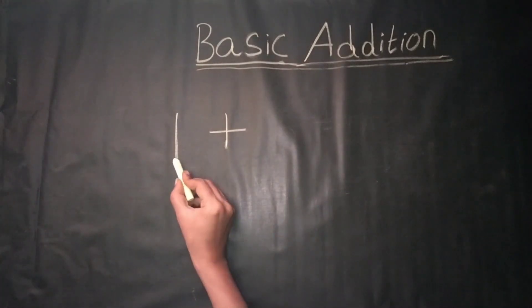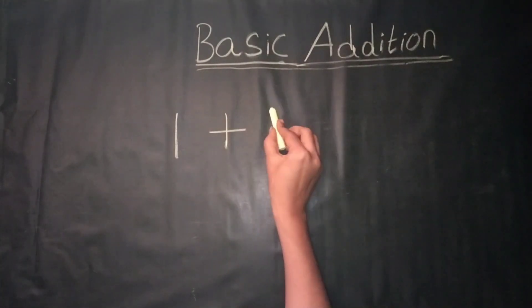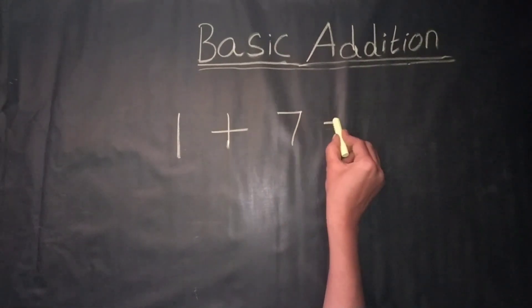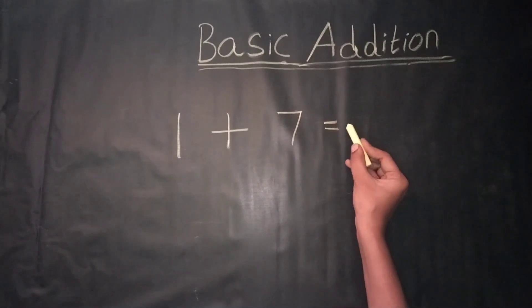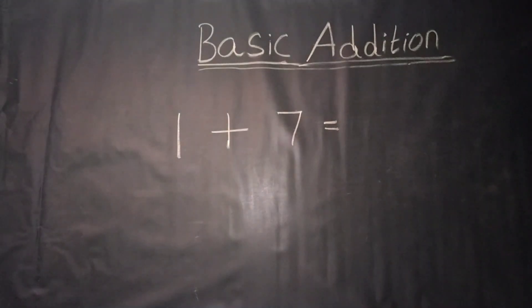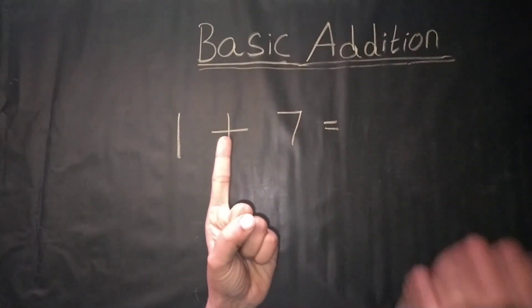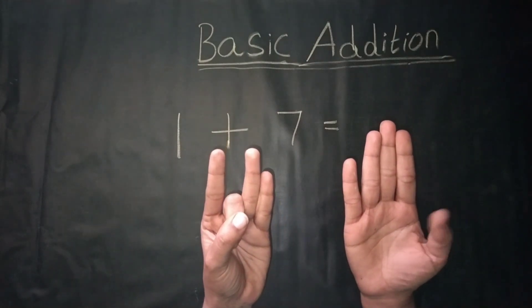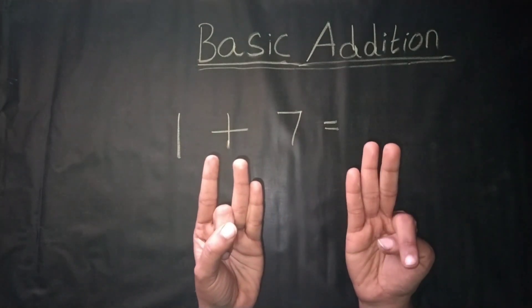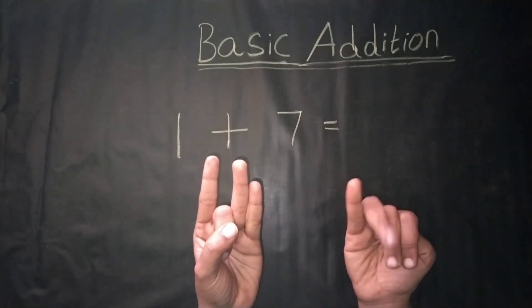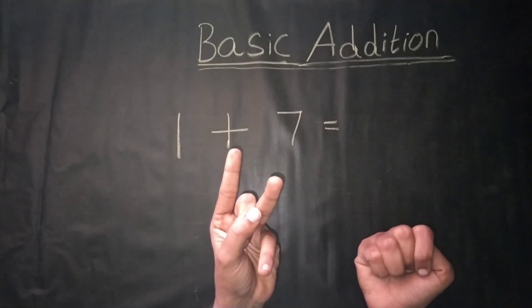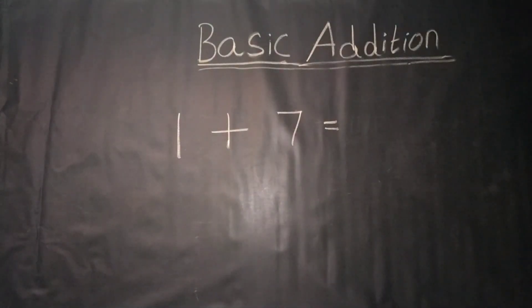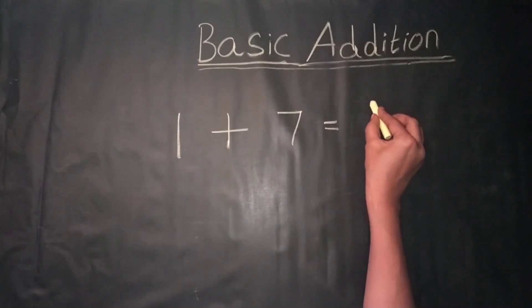1 plus 7 is equal to — counting by fingers, 1 plus 7, count together: 1, 2, 3, 4, 5, 6, 7, 8. We get the answer: 8.